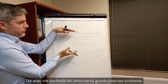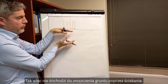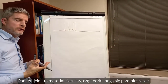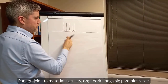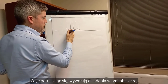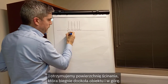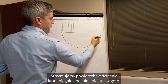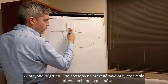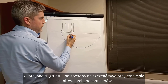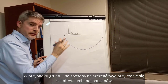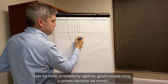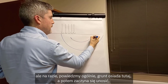We don't get compression failure of the soil — the particles are very hard and won't fail in compression. The particles move around, because it's a granular material, and that's why this area goes down and we get a shear plane that goes all the way around and up. Broadly, the soil goes down here, around here, and then starts to come up.